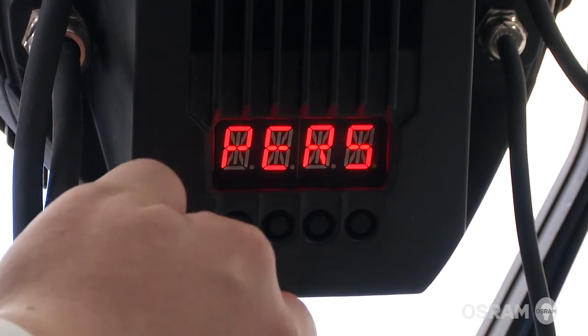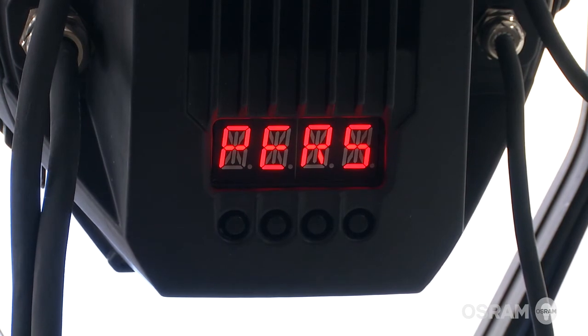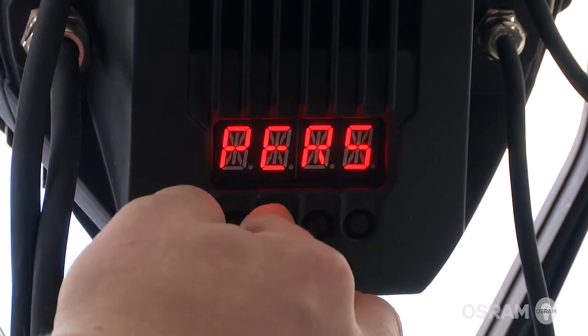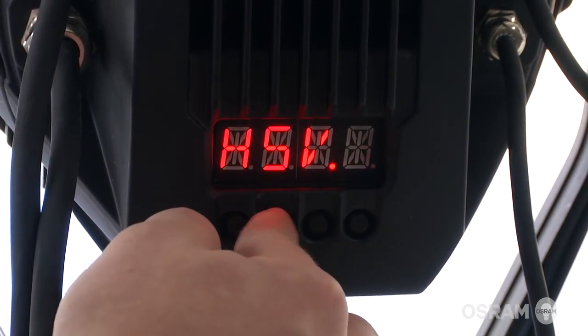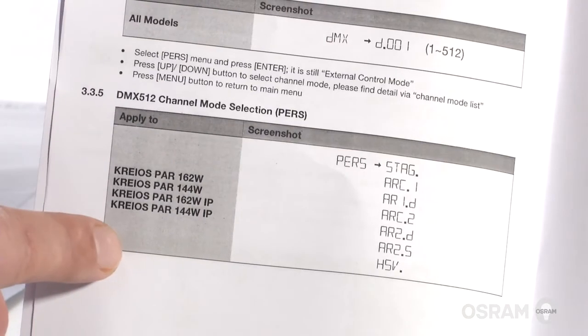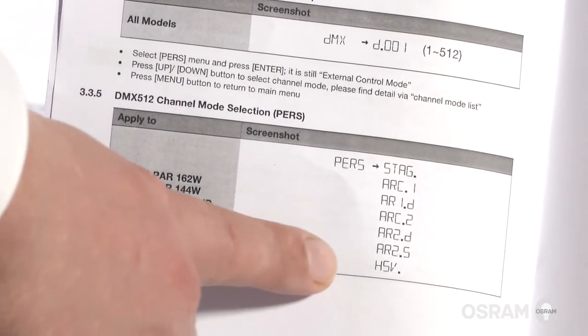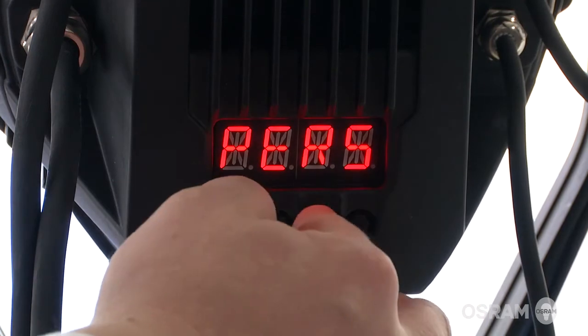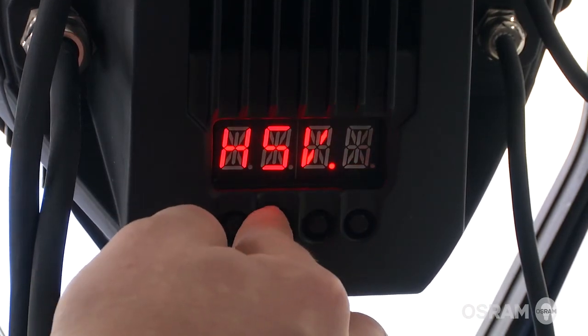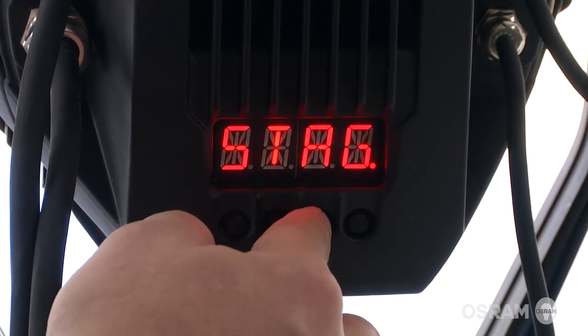Fifth function in the menu is the pre-select function PARS in which you can select different channel modes. You find the detailed channel modes inside the manual. There are several channel modes. In this tutorial we will operate in the channel mode stage, which comes with the most advanced light color functions.